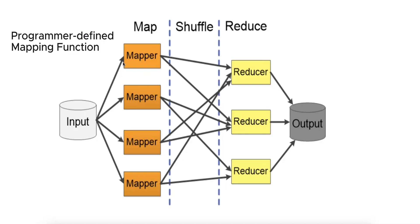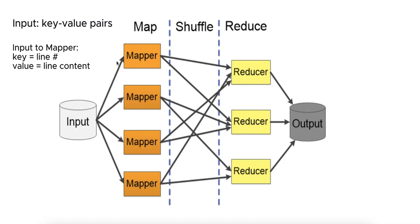There is a mapping function that the programmer defines, which processes the raw data chunk. This function takes input in the form of key-value pairs. For example, in the case of a word count problem, the input might be a line from a text file, where the key equals the line number and the value equals the line content. The mapper function processes each line and emits key-value pairs, for example, word maps to 1.